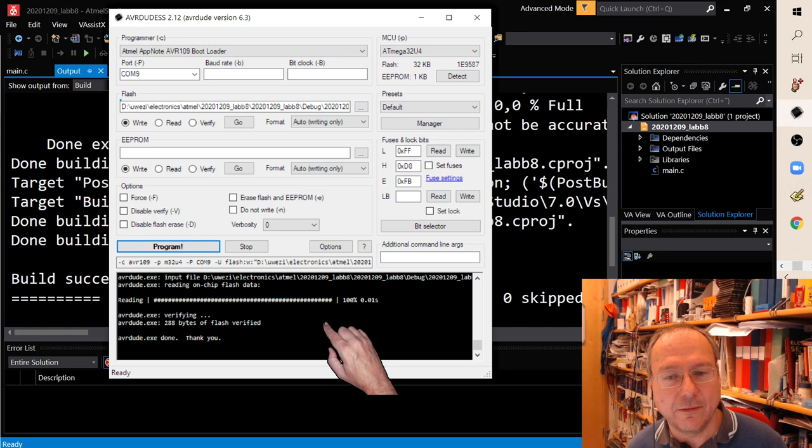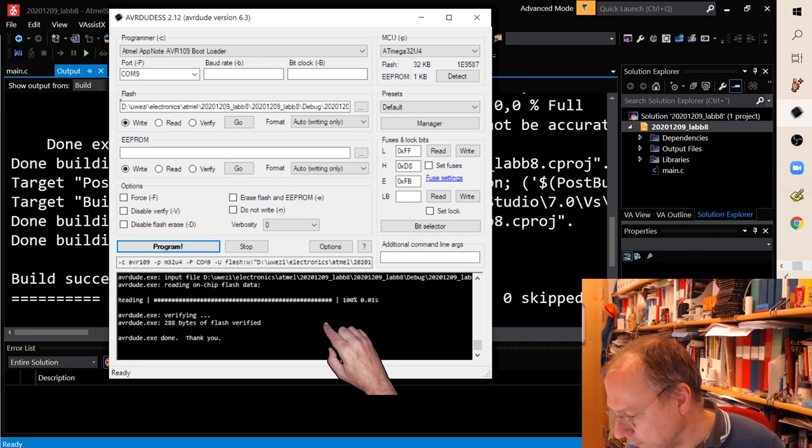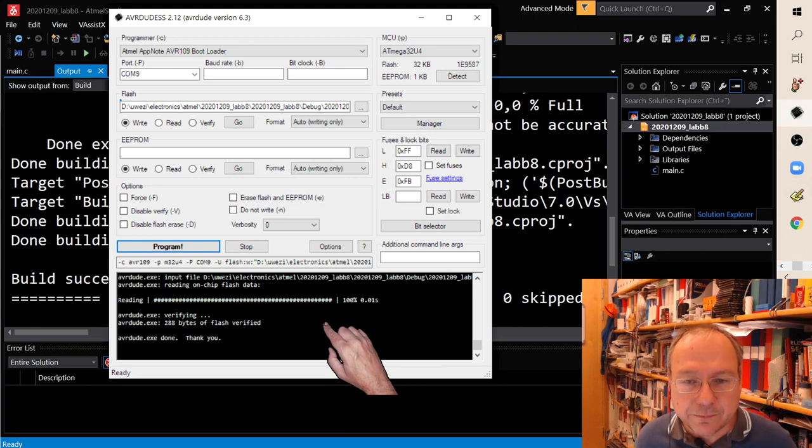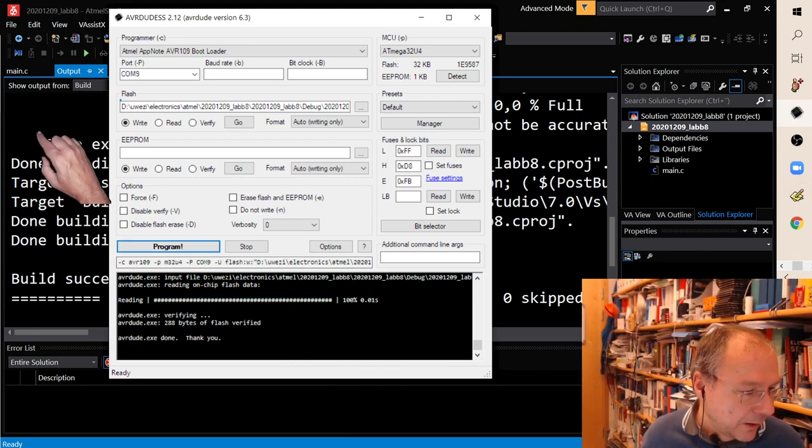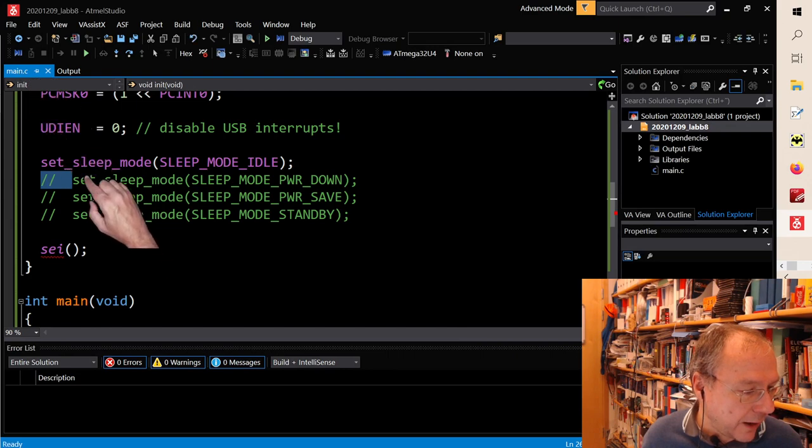But this is the current which the microcontroller still - now it went up to 9 milliamps, no, 8.5, 8.5 milliamps in idle mode. Let's try instead the power down mode.